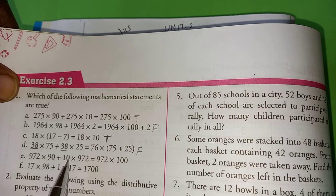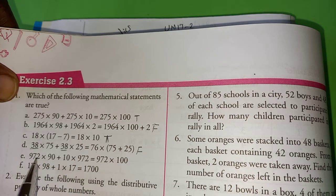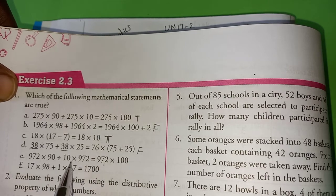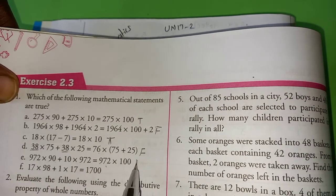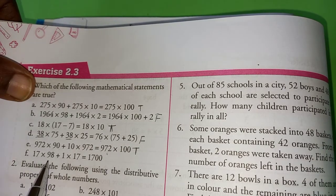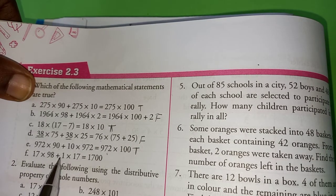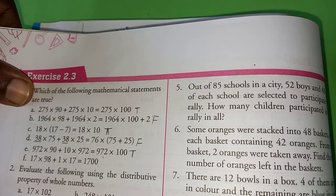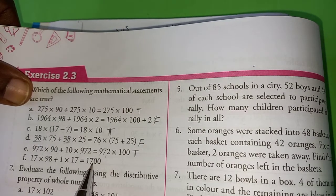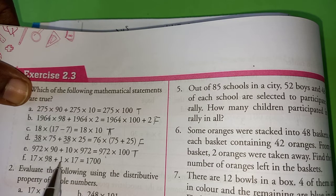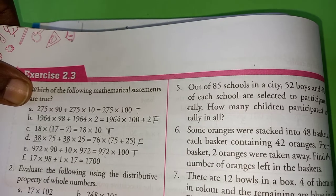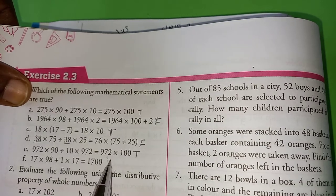972 into 90, 10 into 972. 972 is a common thing. 972 into 90 plus 90. So this is true. 17 into 98 plus 1 into 17. Is it equals to 1700? No, not at all. 98 plus 1 is 99. If they give 2 here, it might be true. But this is false.